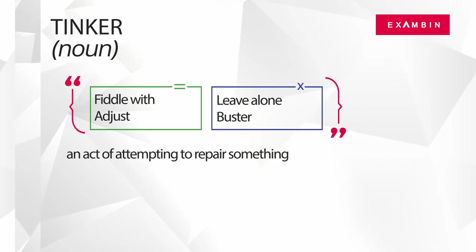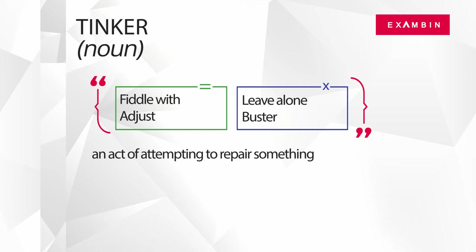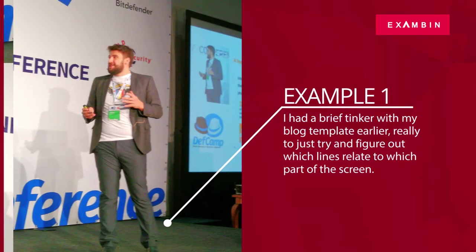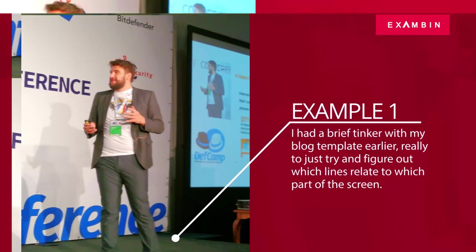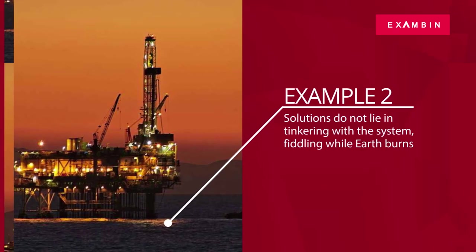The first word is 'tinker.' Tinker is a noun. The direct synonyms of tinker are 'fiddle with' and 'adjust.' In general context, tinker means an act of attempting to repair something. 'Leave alone' and 'buster' are some terms referring to the opposite meaning. Example: 'I had a brief tinker with my blog template earlier, really to just try and figure out which lines relate to which part of the screen.' Another example: 'Solutions do not lie in tinkering with the system, fiddling while earth burns.'